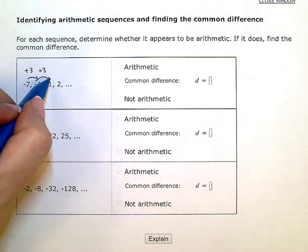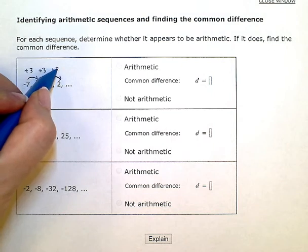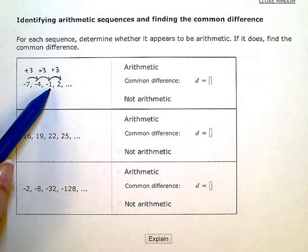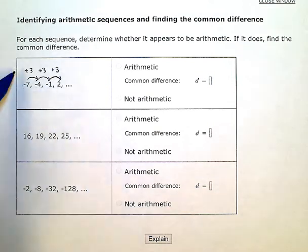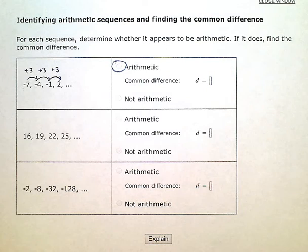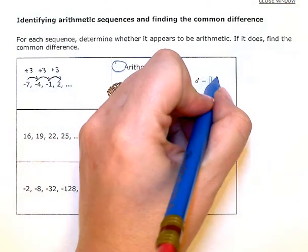From negative 1 to positive 2, again, I added 3 to get from one term to the next term. So since I'm adding or subtracting the same number every time, this sequence is arithmetic and my common difference or d is equal to positive 3.